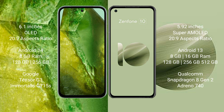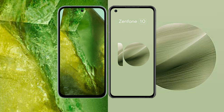Google Pixel 8a comes with 8GB RAM, 128GB to 256GB internal storage, Google Tensor G3 processor, and GPU G7 850 NES. Asus Zenfone 10 comes with 8GB or 16GB RAM, 128GB to 256GB or 512GB internal storage, Snapdragon 8 Gen 2 processor, and GPU Adreno 740.